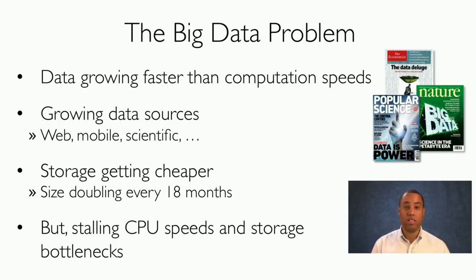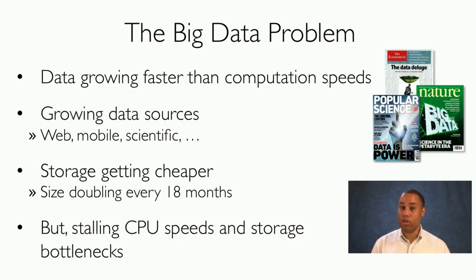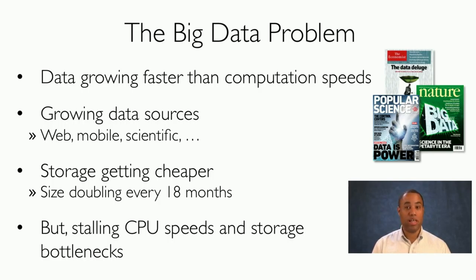Web, mobile, scientific — storage is getting cheaper. This means people are saving more data, and the size of storage is doubling every 18 months, so we can save even more data. But CPUs are not increasing in speed, and we have many storage bottlenecks getting data in and out of this massive storage.